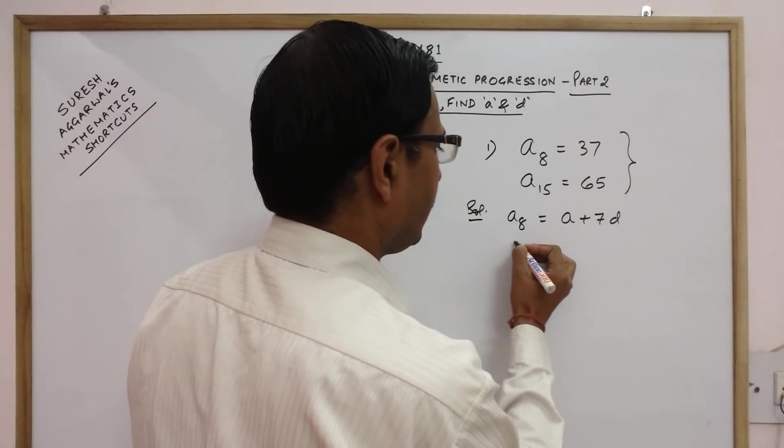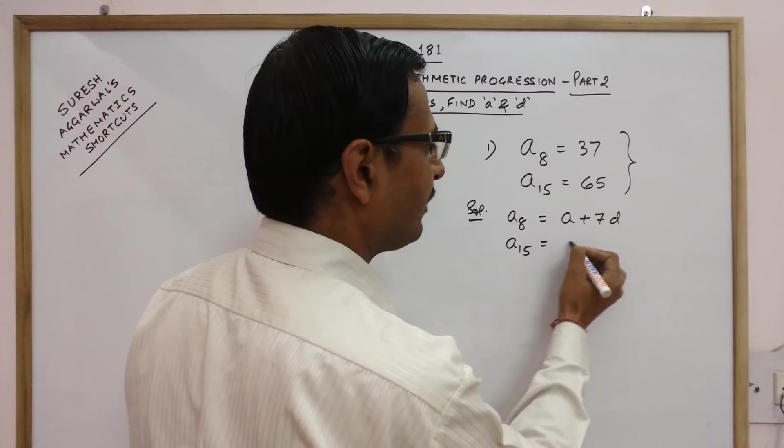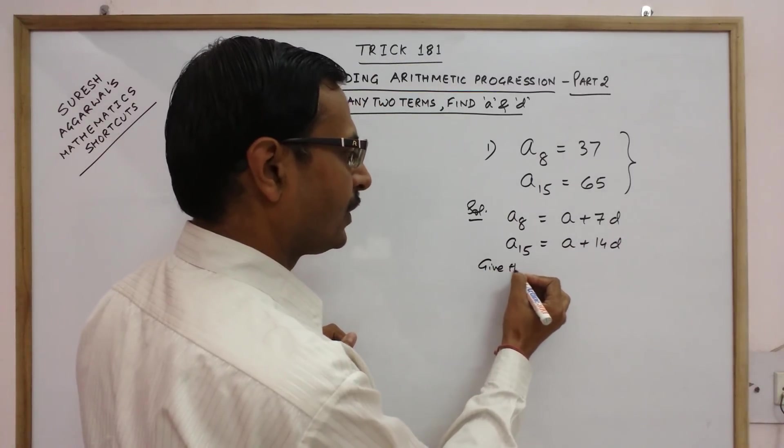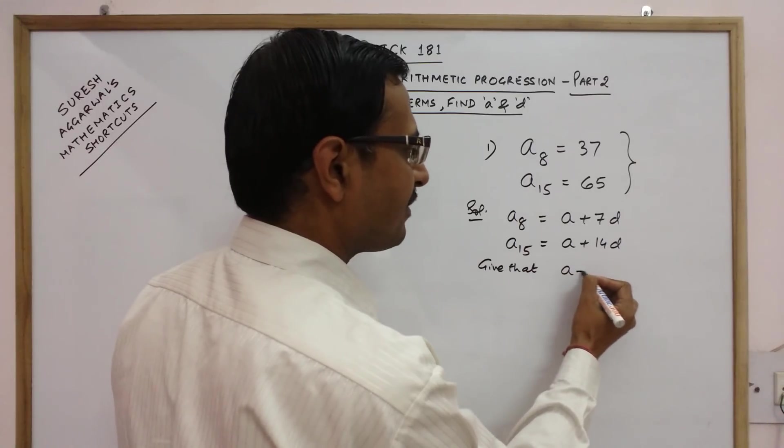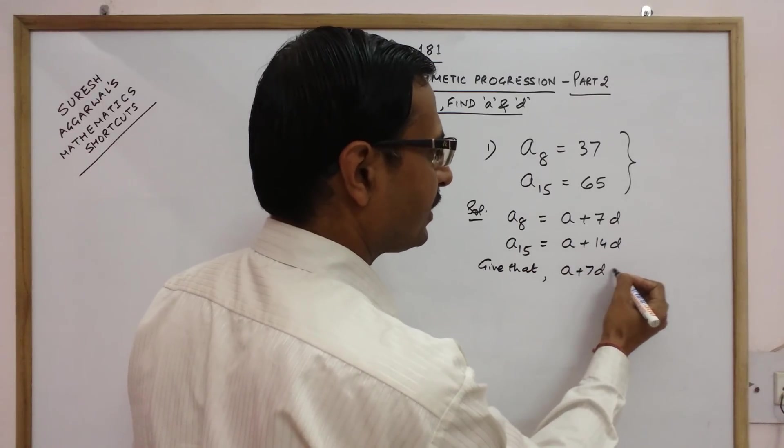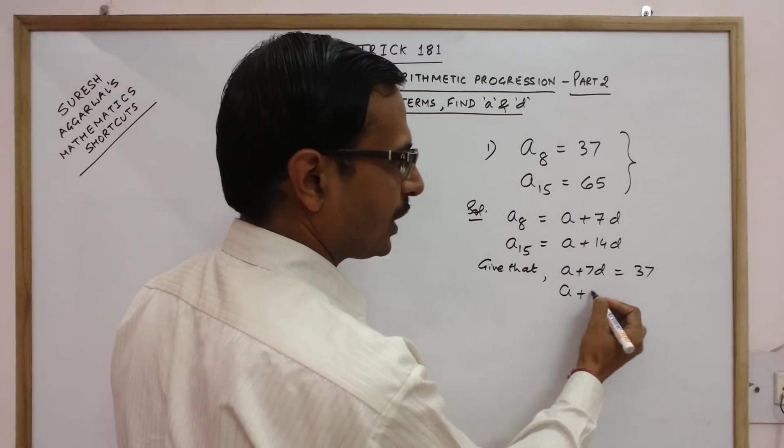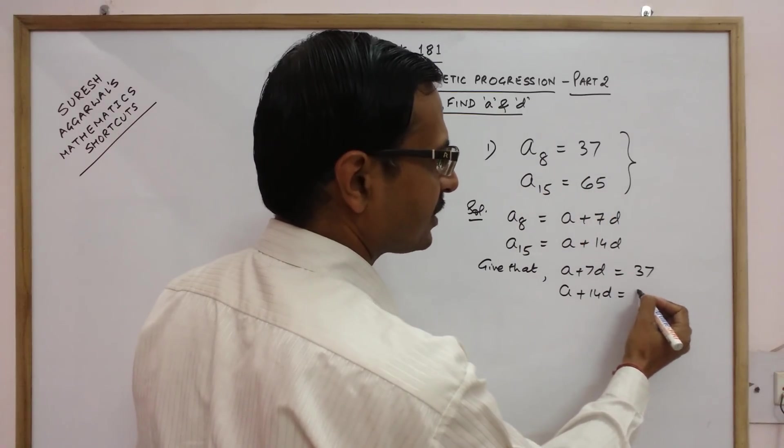And term number 15 similarly will be A plus 14D. Now given that A plus 7D that is the 8th term is 37 here and A plus 14D that is the 15th term is 65.